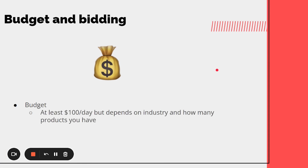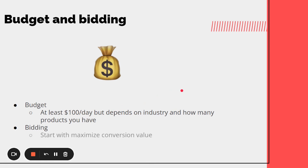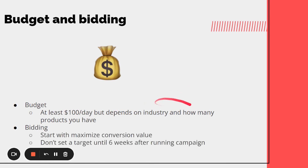For budget and bidding, aim for at least $100 a day as a benchmark, though it depends on your industry and how many products you have. You want enough data to get 100 clicks to make optimization decisions within a few weeks. For bidding, start with maximize conversion value as an e-commerce business and don't set a target ROAS until at least six weeks after the campaign is running — you want to allow Google to optimize and test, because setting a target too early will limit your spend, and if you have no data you're not scaling yet.